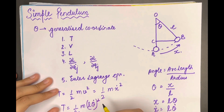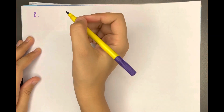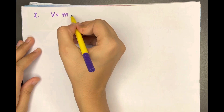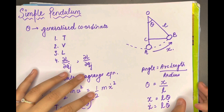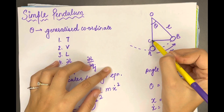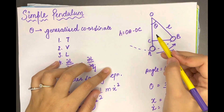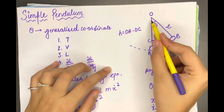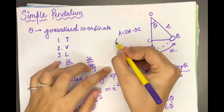The second step is to calculate potential energy. Potential energy V equals mgh. The height in this system is equal to OA minus OC. OA is equal to l, the radius.